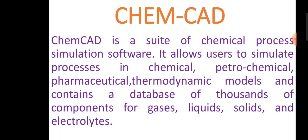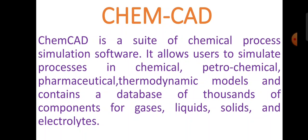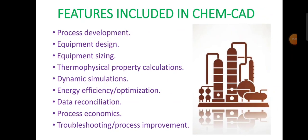The next software is CHEMCAD. CHEMCAD is a suite of chemical process simulation software that allows users to simulate processes in chemical, hydrochemical, and pharmaceutical industries. It uses thermodynamic models and contains a database of thousands of components for gases, liquids, solids, and electrolytes. Features include process development, equipment design, equipment sizing, thermophysical property calculation, dynamic simulations, energy efficiency optimization, data reconciliation, process economics, troubleshooting, and process improvement.